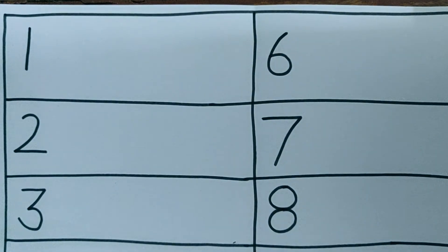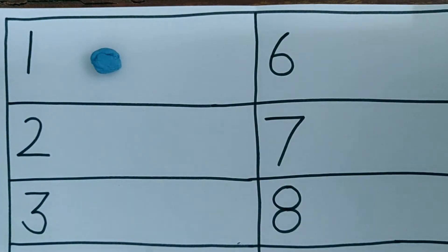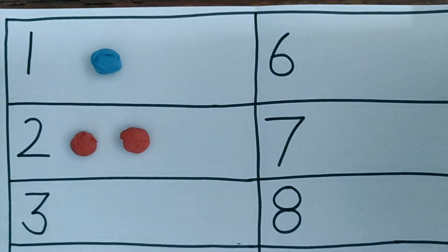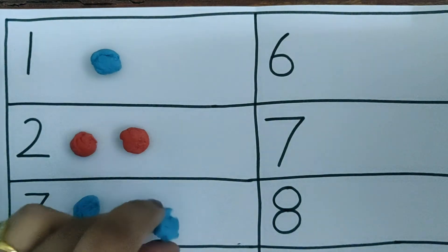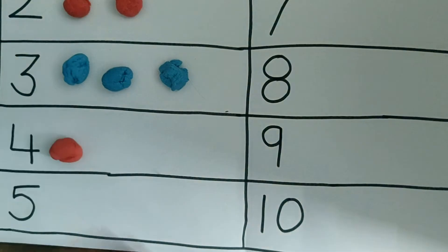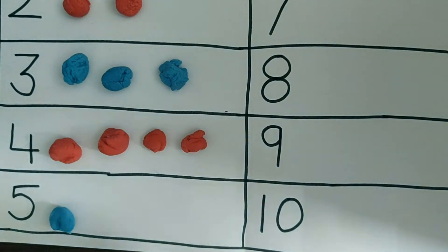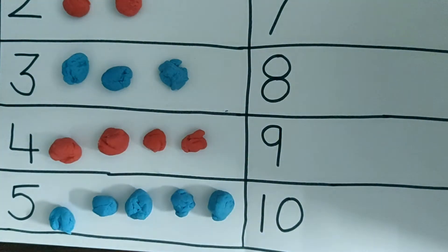Now let's count number 1. The child will put 1 ball in number 1. Then, 2, 3, 4, and 5. Two, 3, 4, 5. This was number 1 to 5.